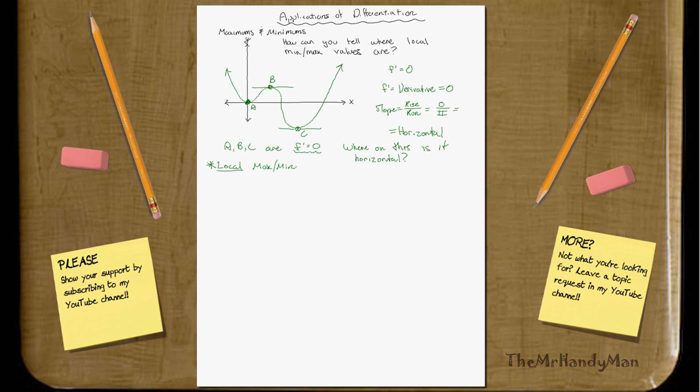So what do they mean by local? Well, notice how these arrows on the far left and arrows on the far right, they continue to go up. So obviously, B is not the highest. But it is locally, if you look on the right side or the left side of B, you'll realize that locally it is the highest point.